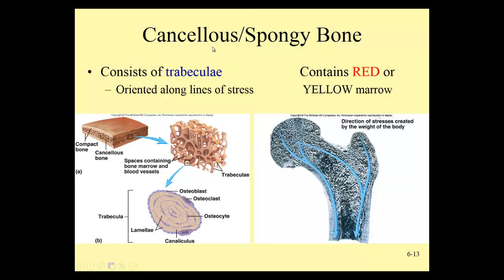Cancellous bone is another name for spongy bone. We find this in the center of flat bones — for example, the flat bones of the skull — and it contains tiny fibers of bone that give it a spongy appearance. We also find it on the ends of long bones in the epiphyses. These tiny fibers are called trabeculae, which you'll want to highlight.